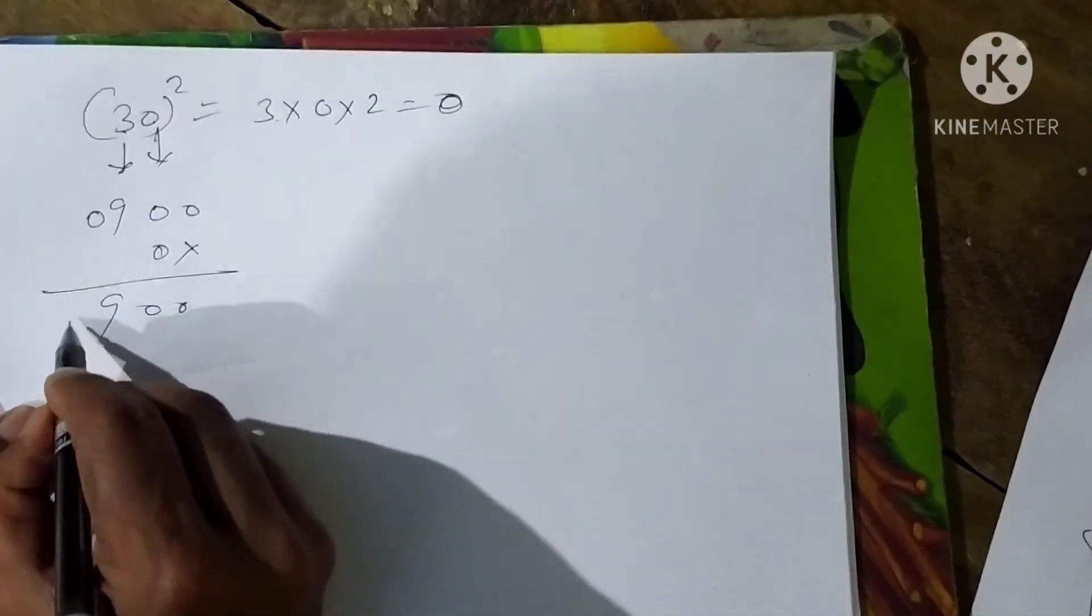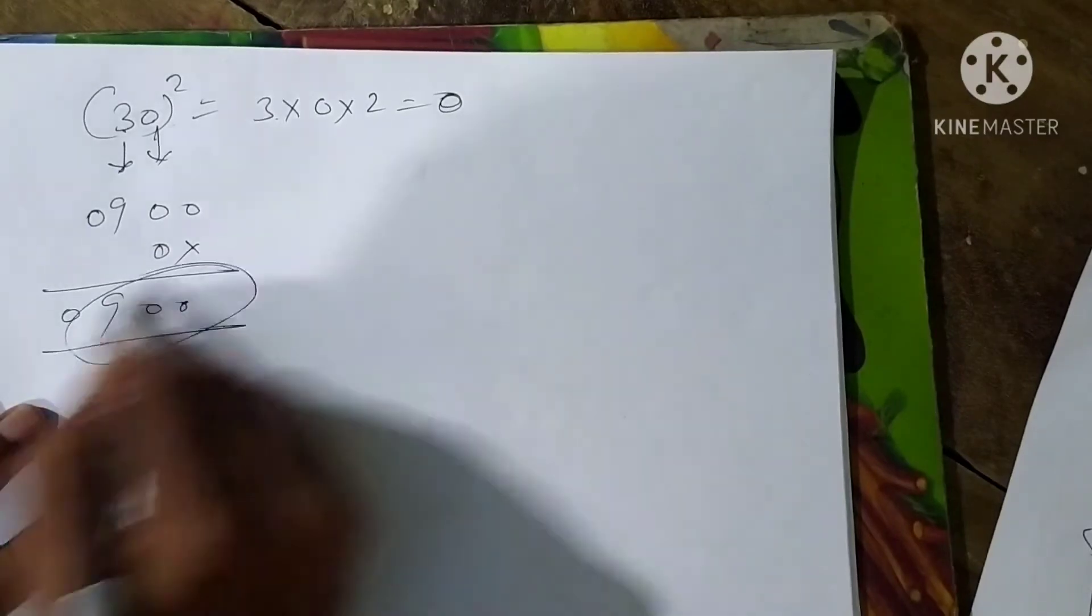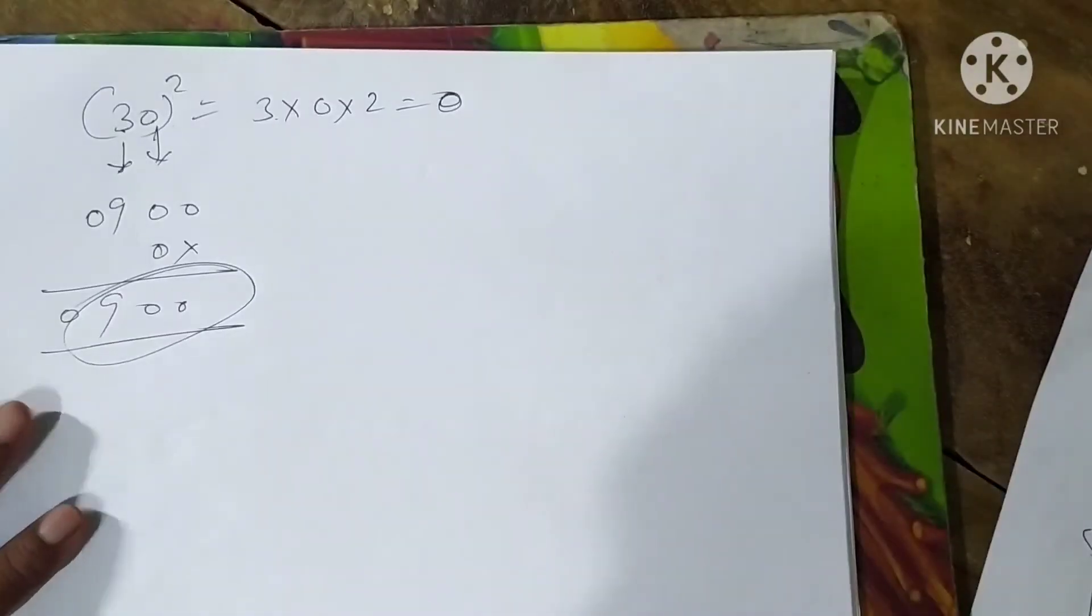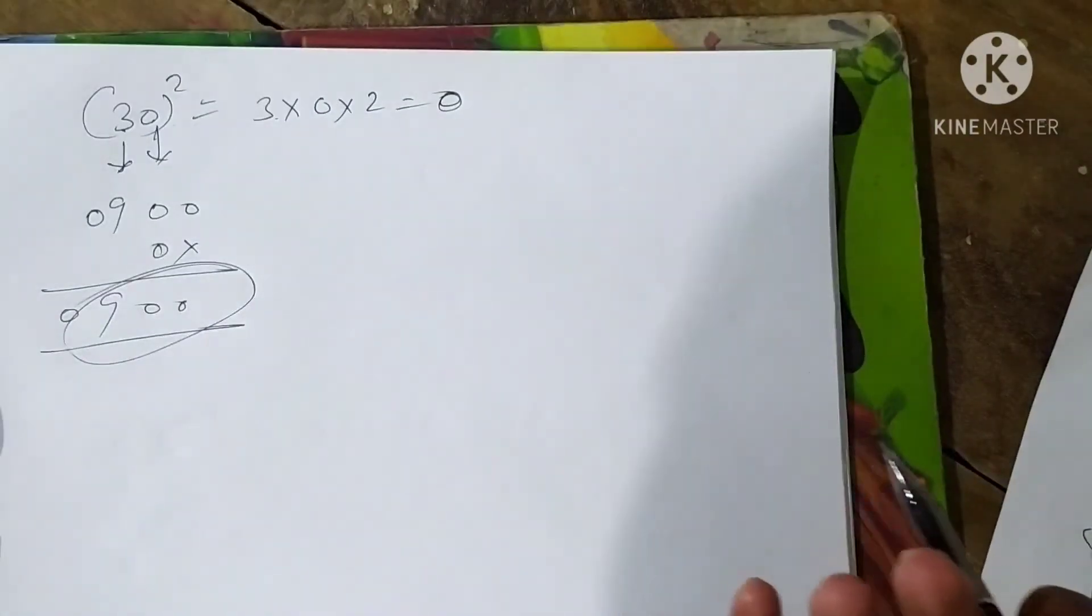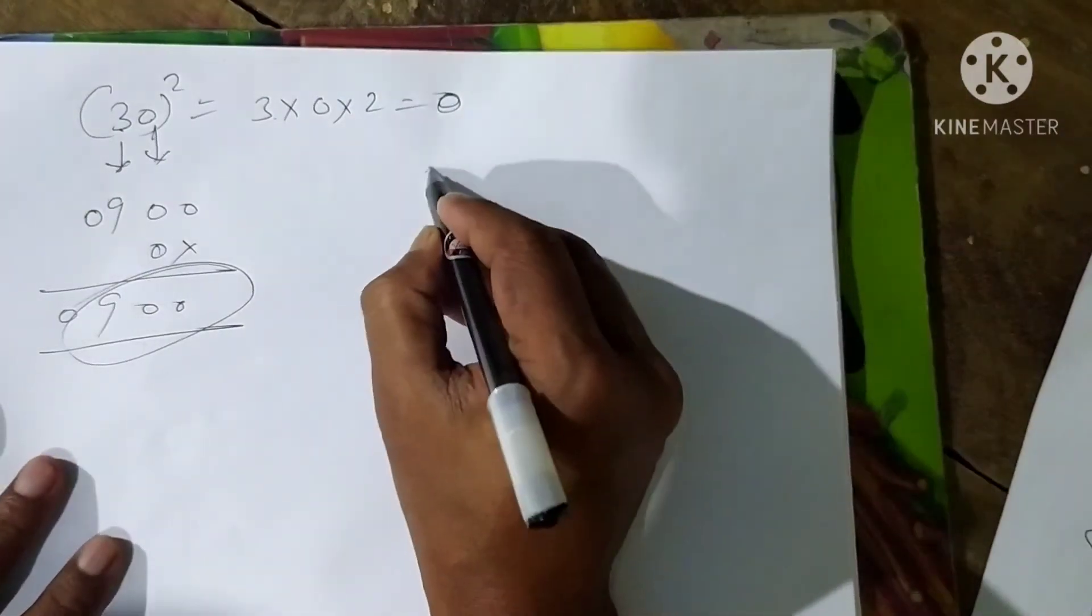And this is the answer: 0, 0, 9. If you do not like 0, you will get down. You can get down to 99.